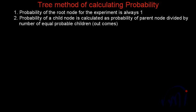First rule is: probability of the root node for the experiment is always one. Second rule is: probability of a child node is calculated as probability of parent node divided by the number of equal probable children, and here by children we mean the outcomes of the experiment.